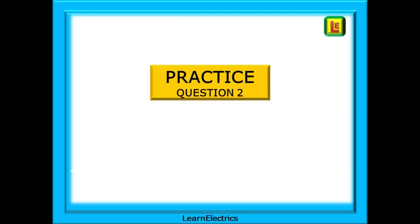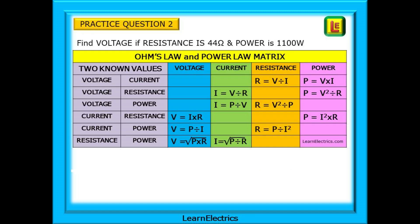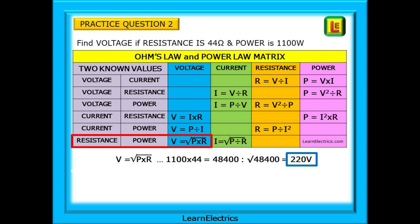On to practice question number two. We are asked to find the voltage if the resistance is 44 Ohms and the power is 1100 watts. Pause the video and attempt this yourself. Here is the calculation and the answer, 220 volts. Hopefully you agree. If not, pause the video and check your working out.